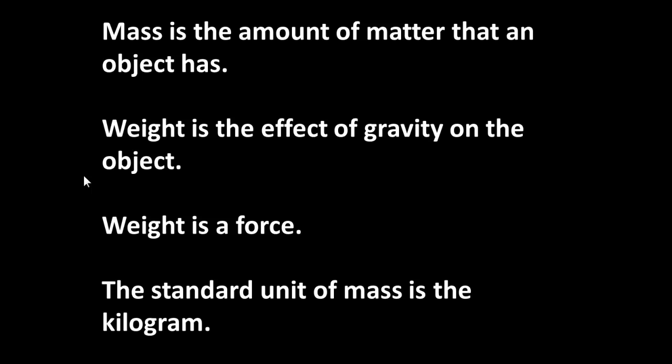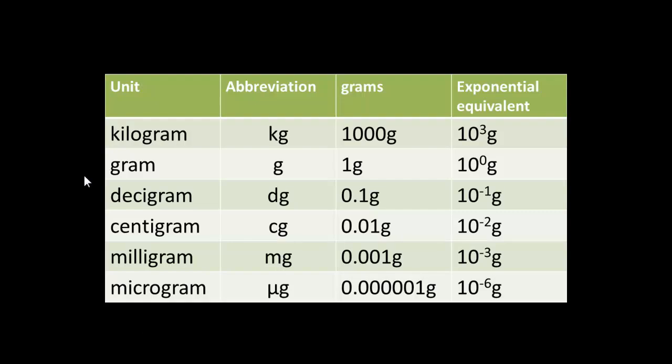And the standard unit of mass is the kilogram. Remember that we are using metric units. So if we look at our metric units of mass, we find the standard unit, or the base unit if you like, is the kilogram, in abbreviation kg. A kilogram consists of 1000 grams and can also be written as 10 to the power of 3 grams.